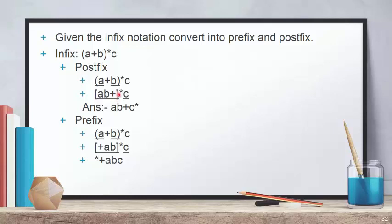The square brackets are optional and the conversion is complete. Now for prefix, we follow the same rules — scan from left to right — but place the operator before the operand. First, we solve the bracket expression: we place plus before A, giving plus A B.